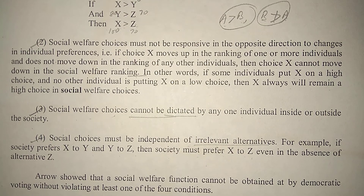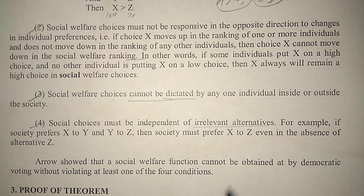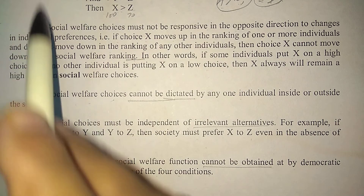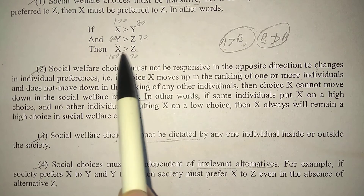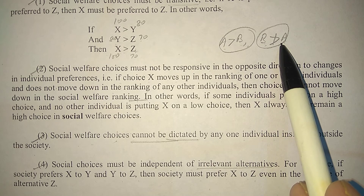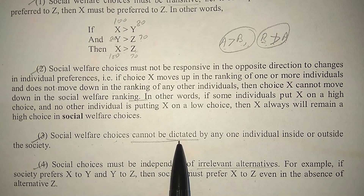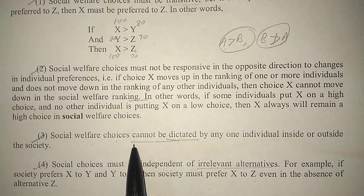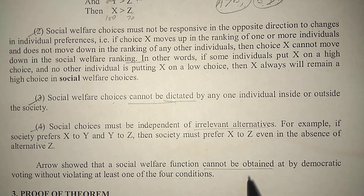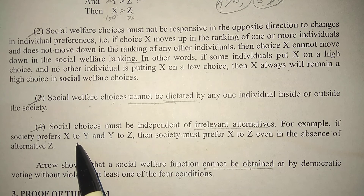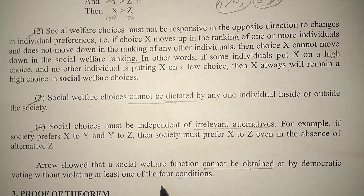Arrow showed that a social welfare function cannot be obtained by democratic voting without violating at least one of the four conditions. Given these four genuine conditions — X > Y > Z implies X > Z, A > B means B cannot be greater than A, and social welfare cannot be decided by one person but must be formed democratically — democratic voting still fails to produce a valid social welfare function. This impossibility is why the theorem is proved in Part 3.